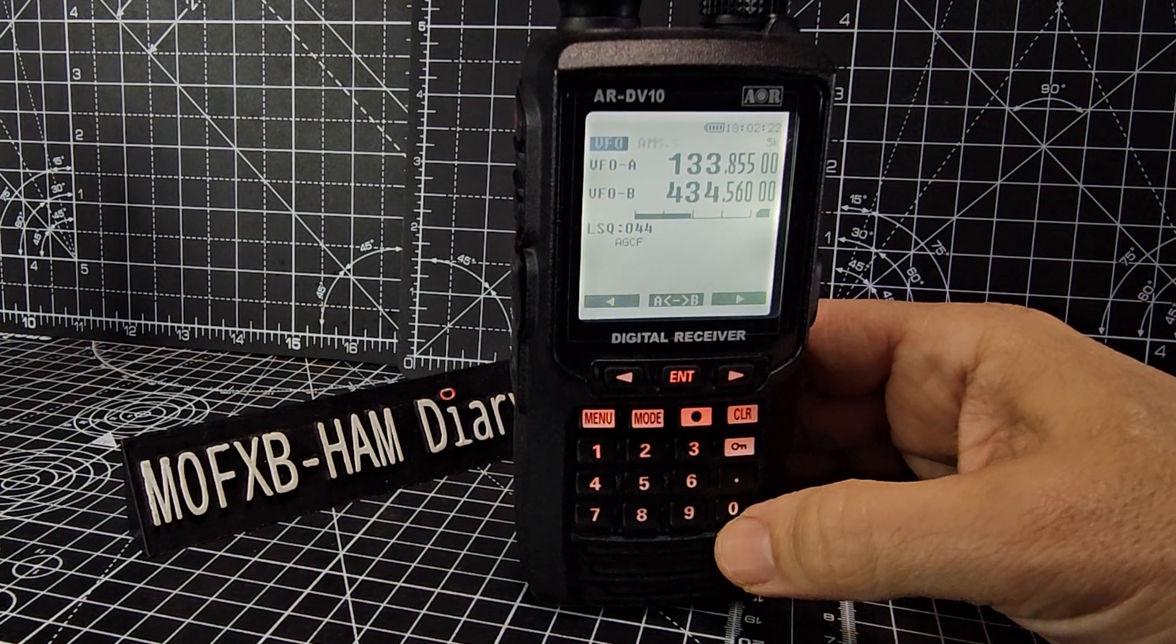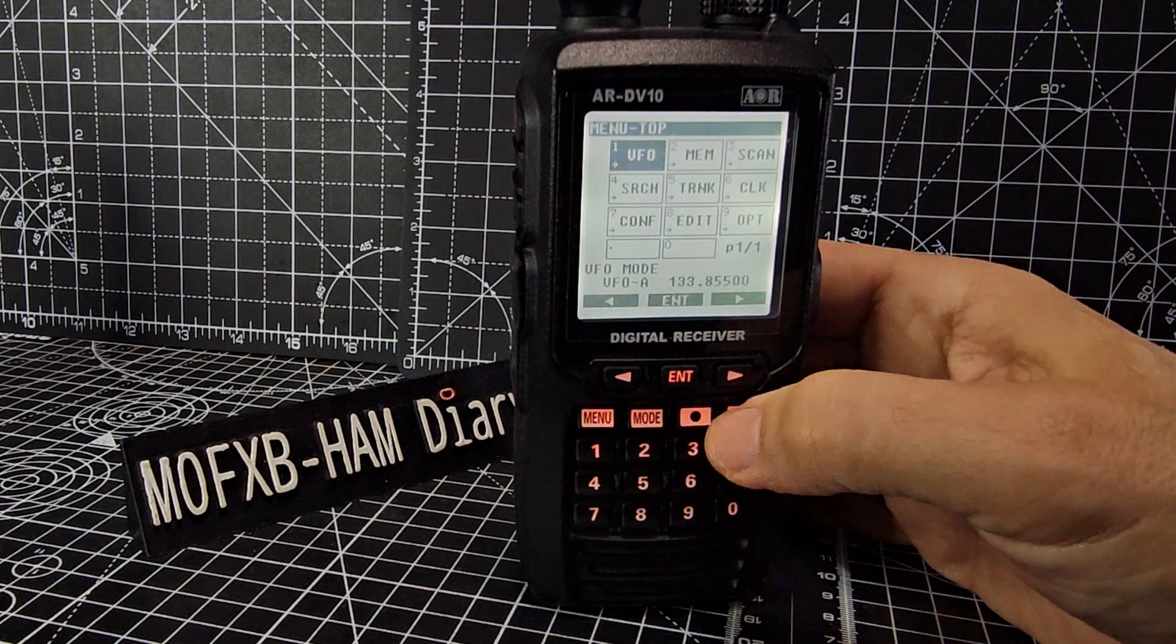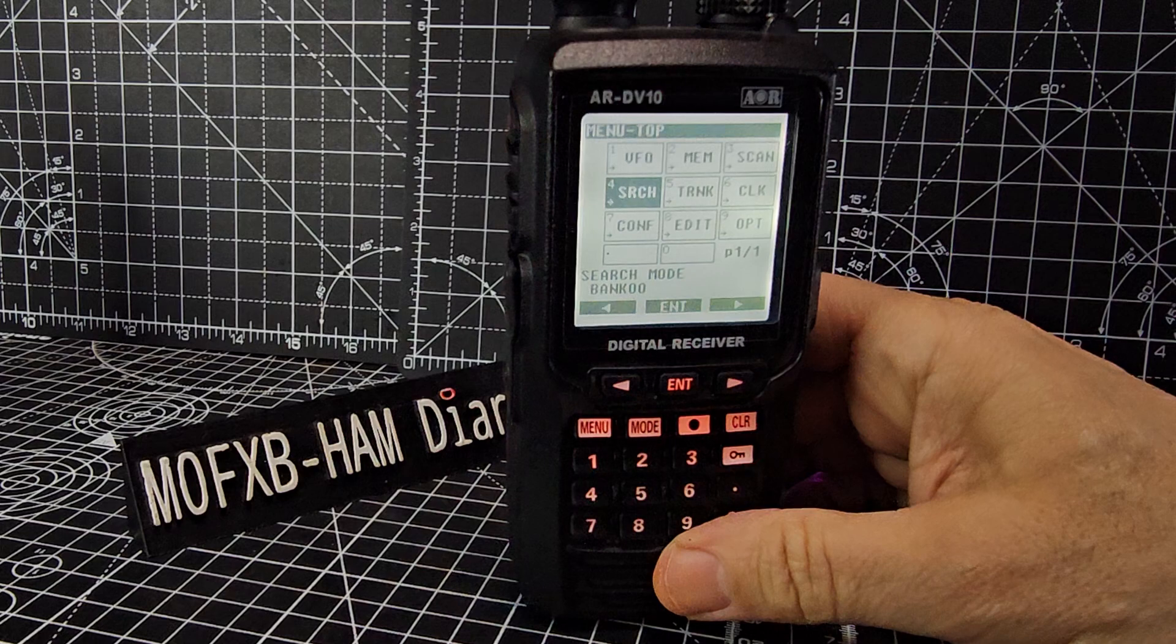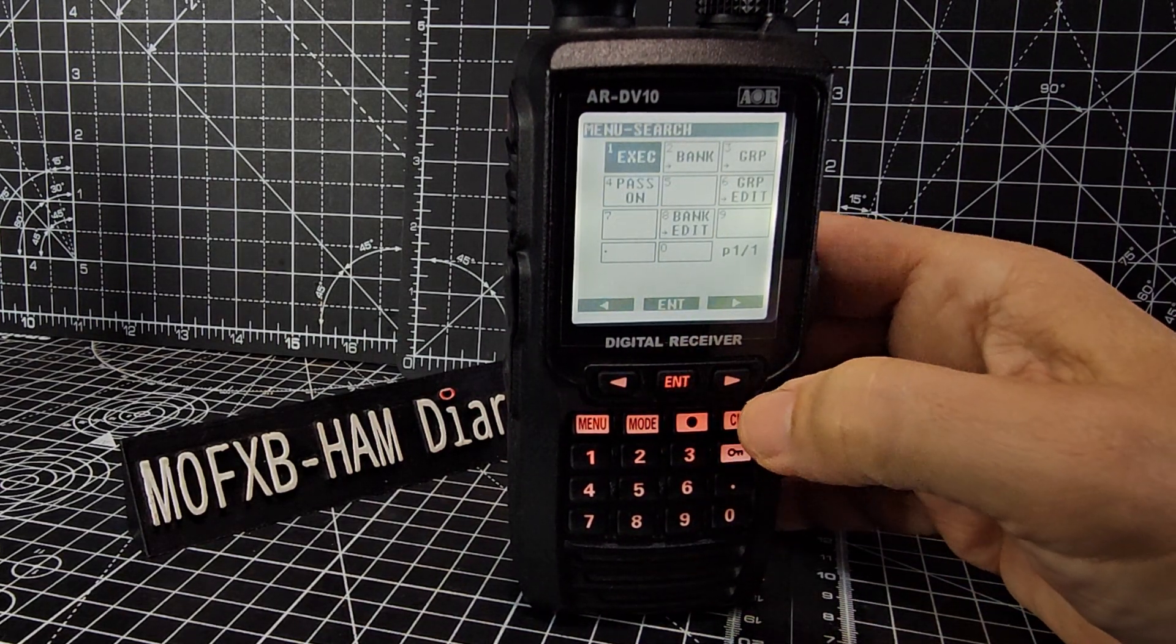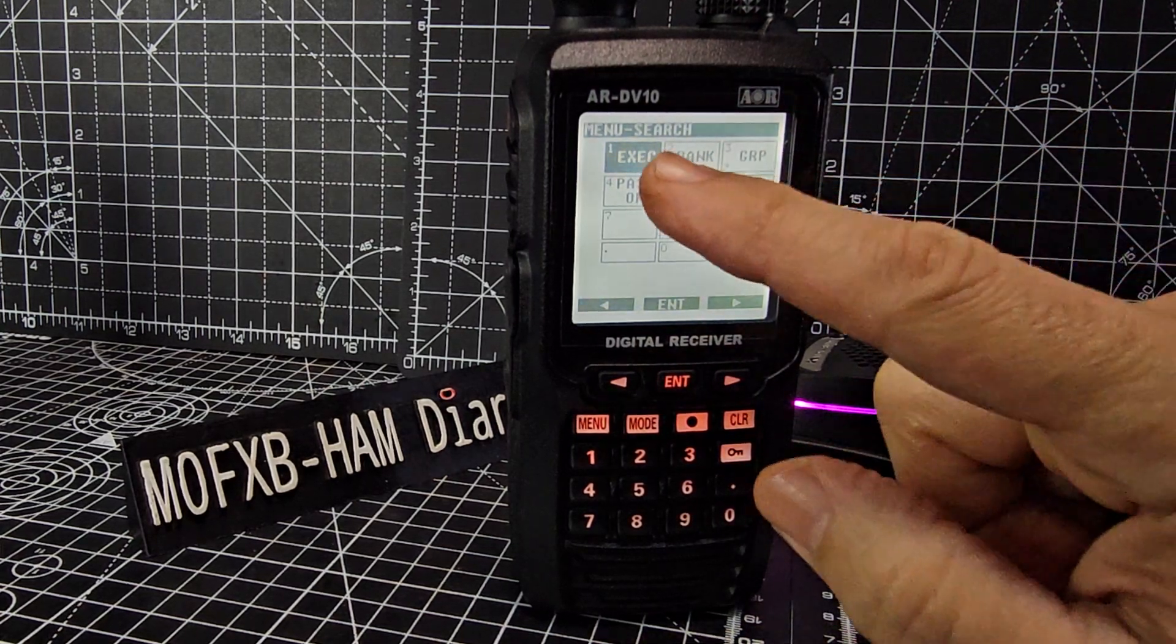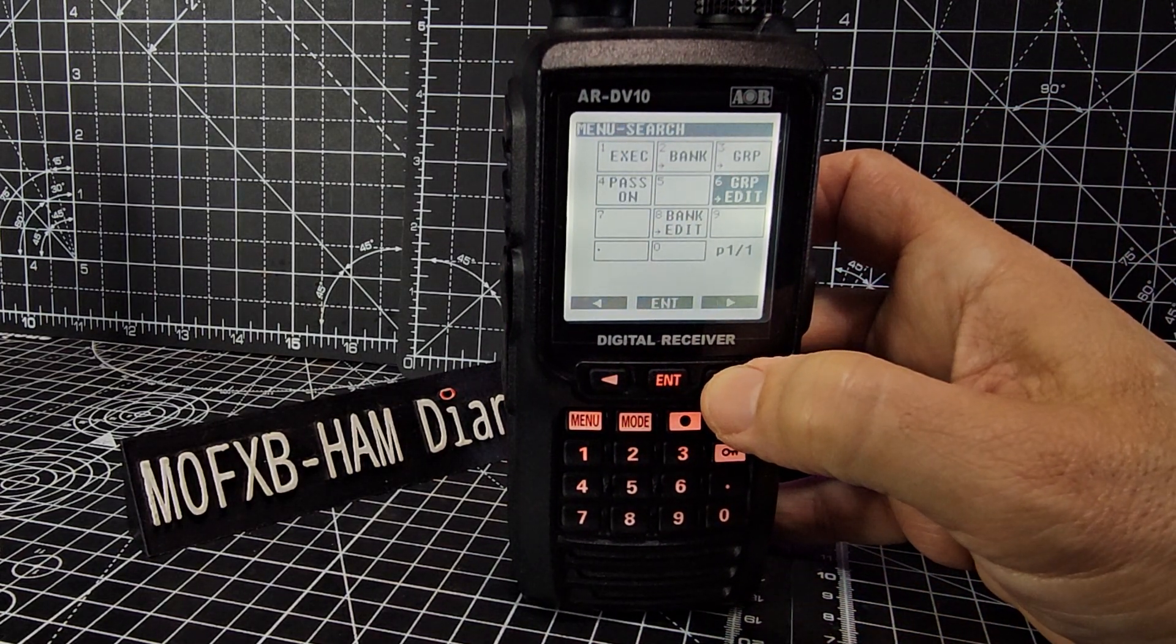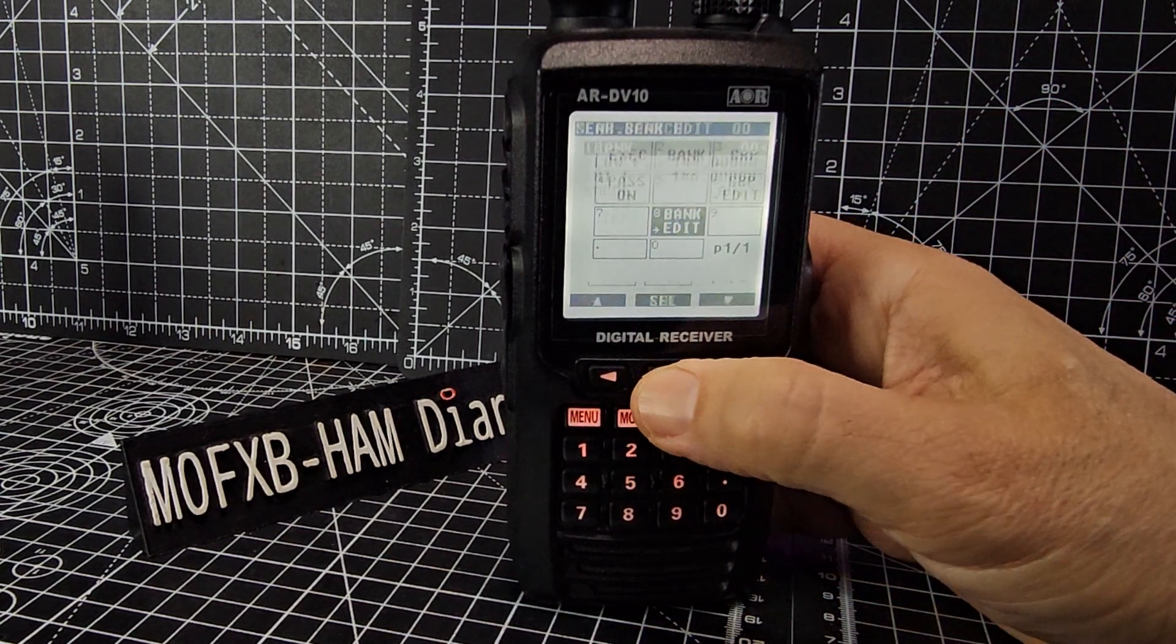This does have an SD card, although this device works without an SD card where some scanners don't, and you can load up frequencies and import them into the radio in banks and groups as well. But right now what we're going to do is have a look at the search bank option. So we're going to go menu, and then we're going to go across to number 4 which is the search option, and press enter.